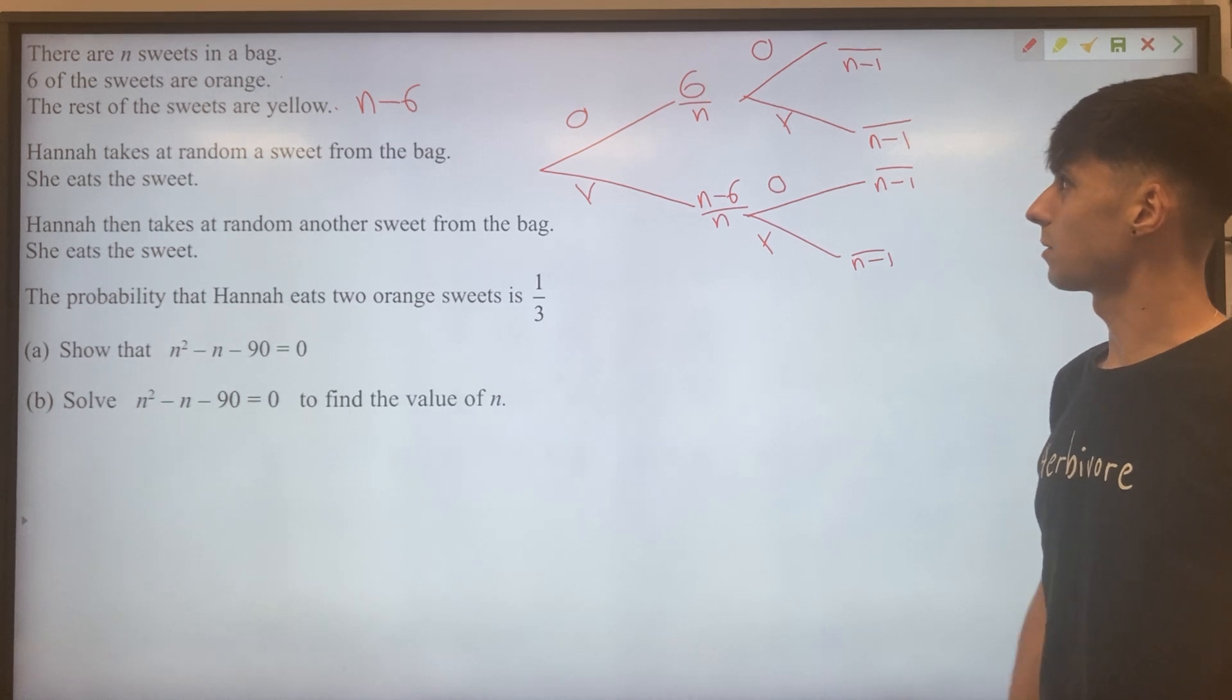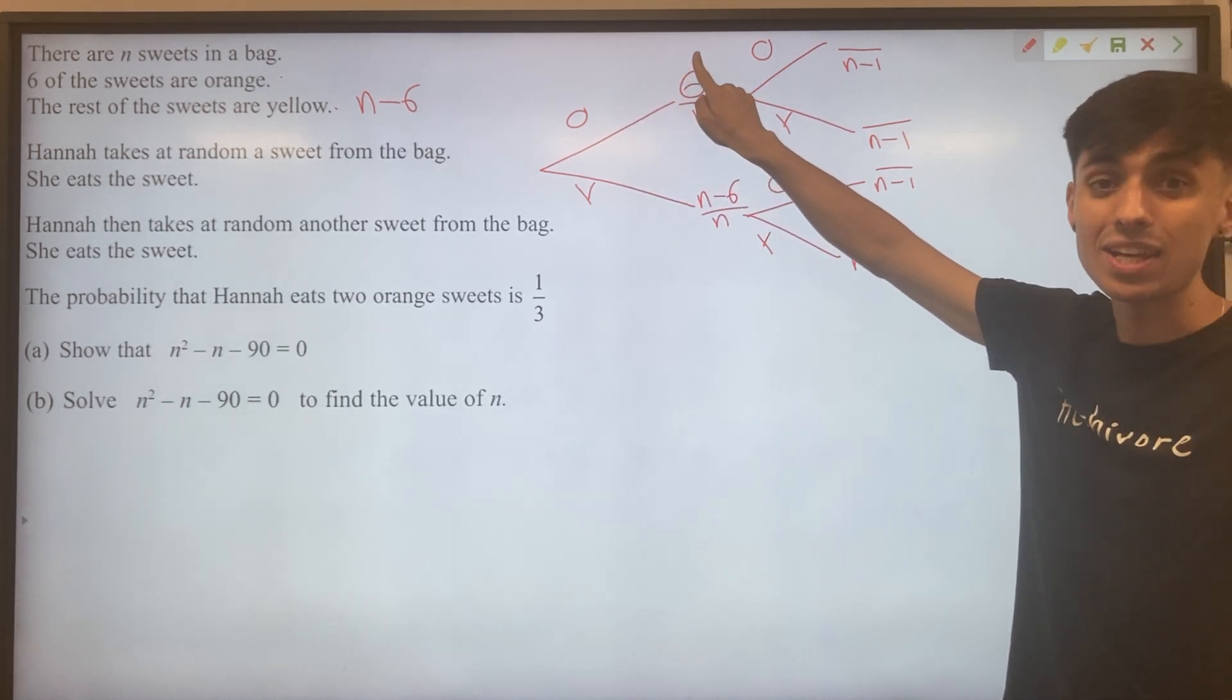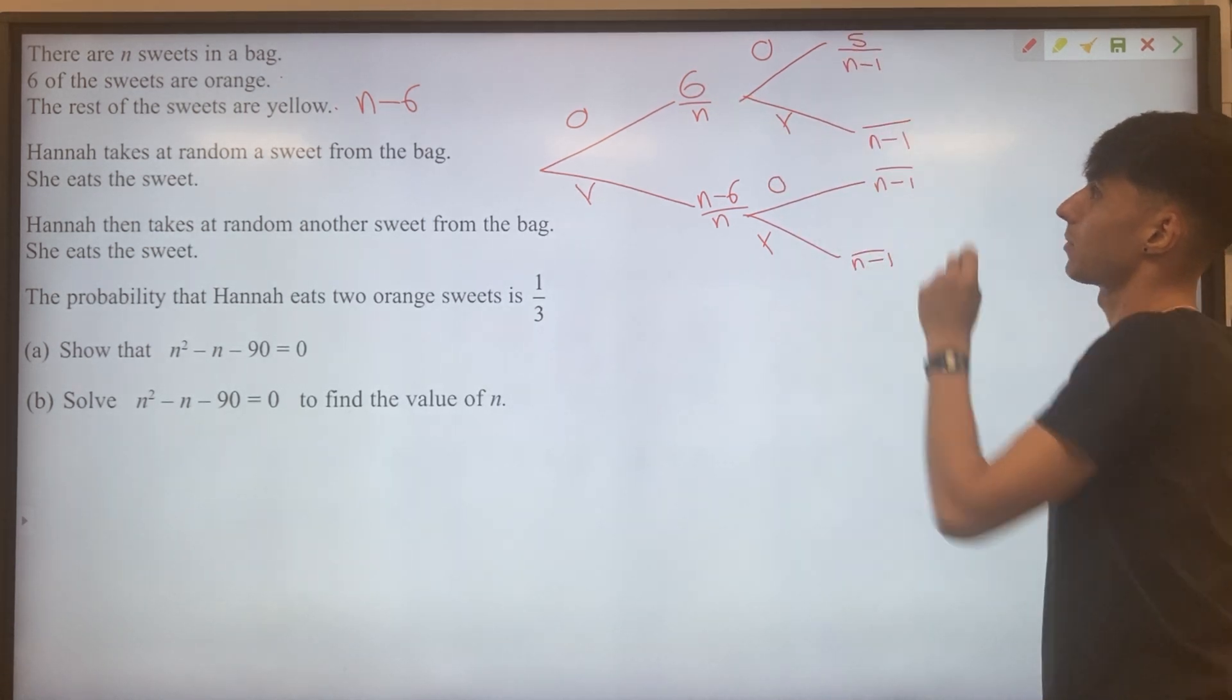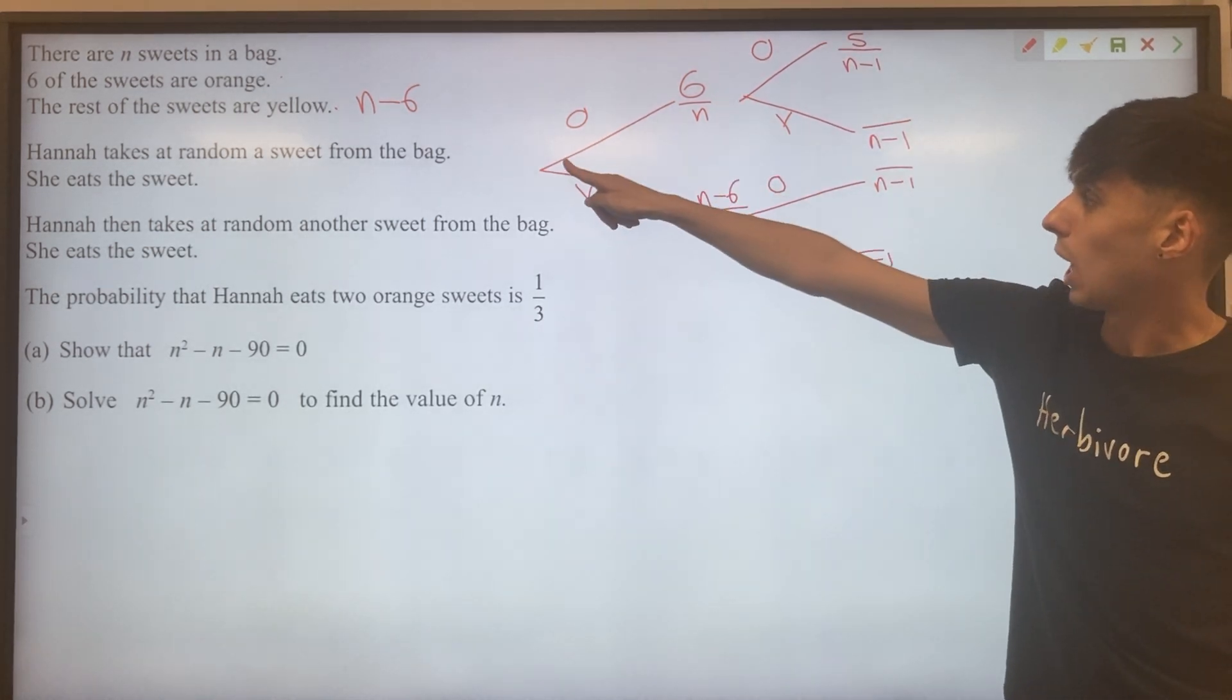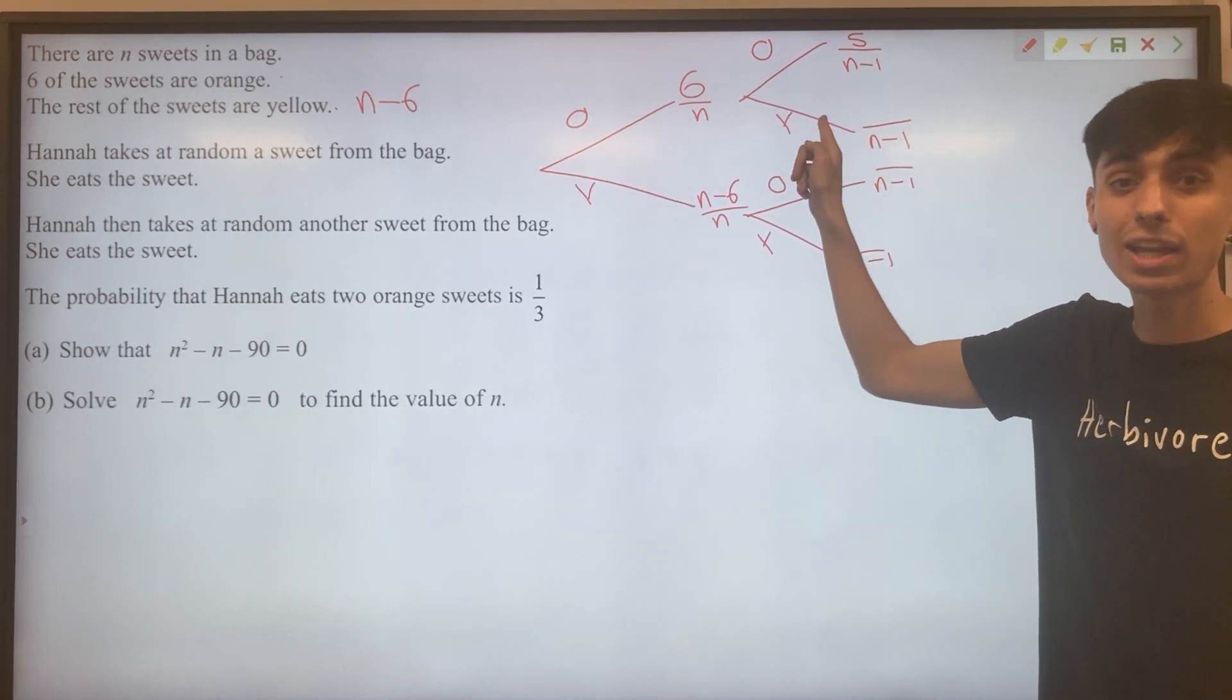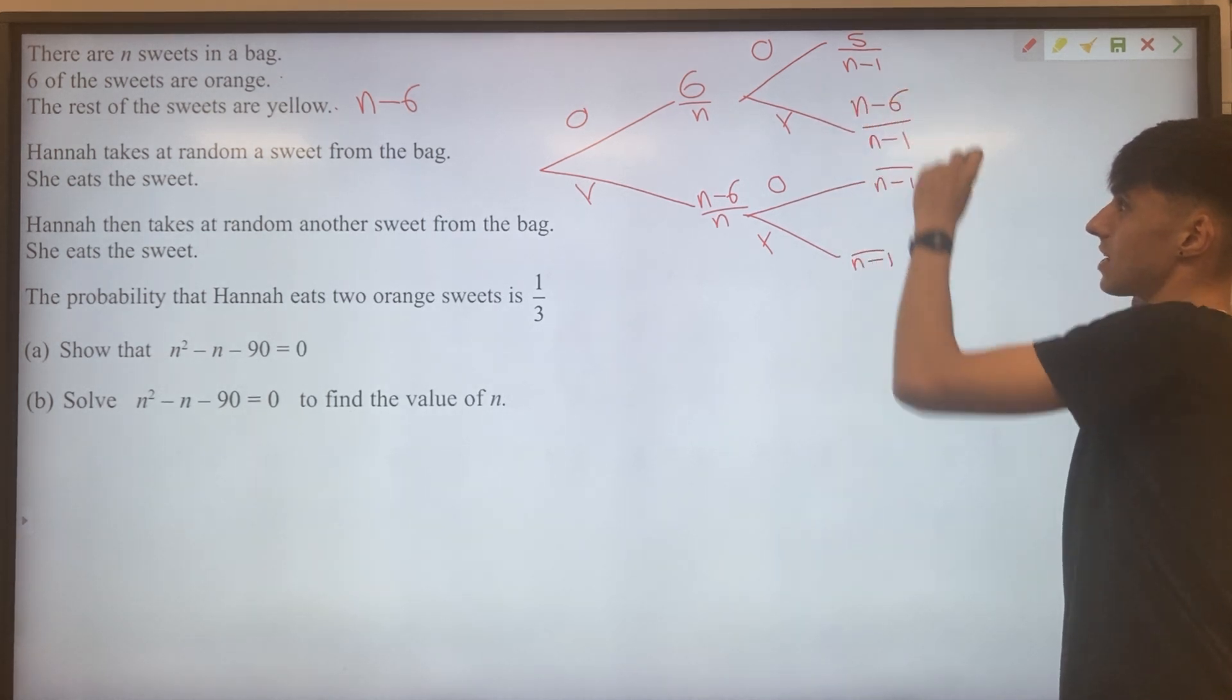Thinking about our other numbers then, if she picked an orange sweet and ate it, well of those six orange sweets, only five are left now. However, if she ate the orange sweet, she hasn't affected the number of yellow sweets in this case. So here we still have N minus six.